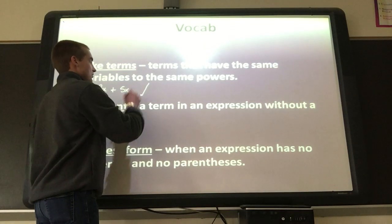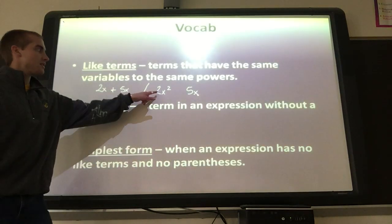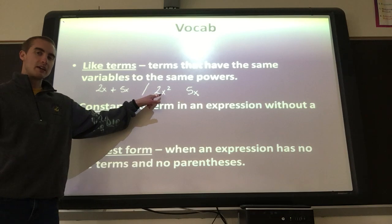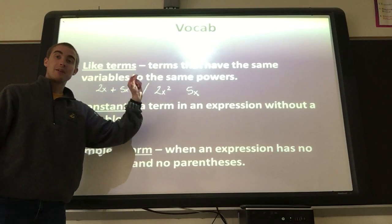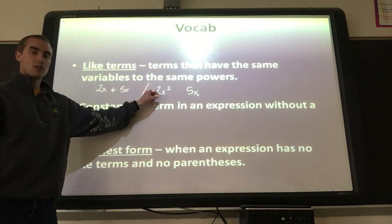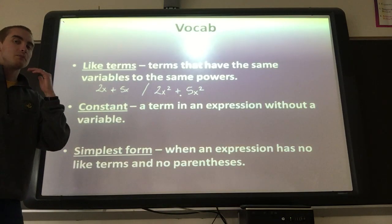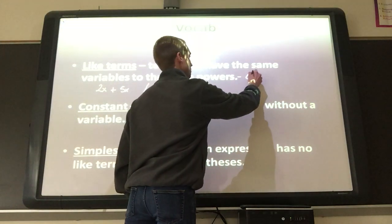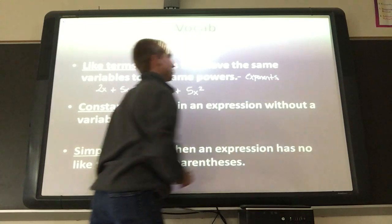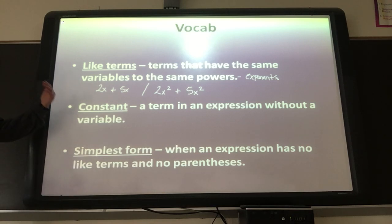Something that is NOT a like term: 2x squared and 5x, because 2x squared means 2 times x times x, while 5x is just 5 times x. They must have the same exponents and the same variable. If we made it 5x squared, then they would be like terms. So x squared is not the same thing as x, and x to the third power is different from x to the second power.